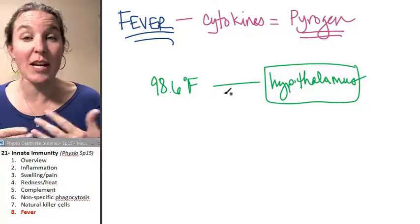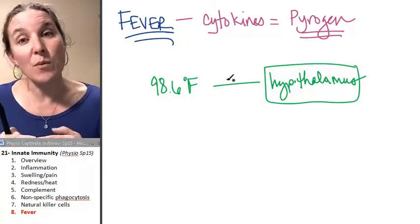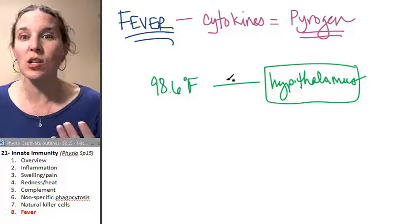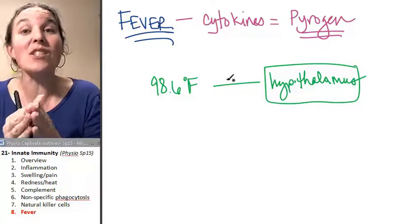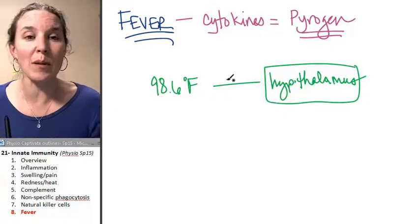And until it gets back to its homeostatic range, and then the hypothalamus, if your body temperature goes higher than the homeostatic range, then the hypothalamus is going to say, hey, let's initiate vasodilation in the skin.